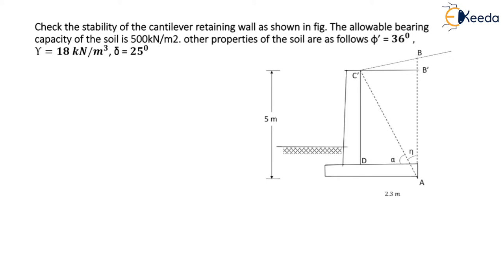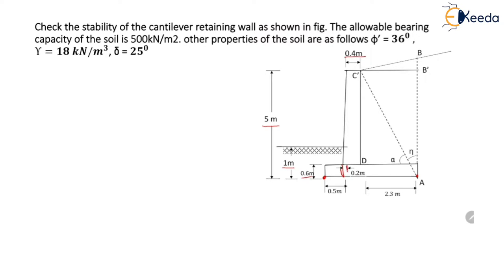From the figure we can see that the overall height of the retaining wall is 5 meters. The height of the retaining wall below the ground surface is 1 meter. The thickness of the base slab is 0.6 meter. The top width of the stem is 0.4 meter. The distance between the toe and the stem is 0.5 meter. The horizontal distance covered by the inclined slope of the surface is 0.2 meter.